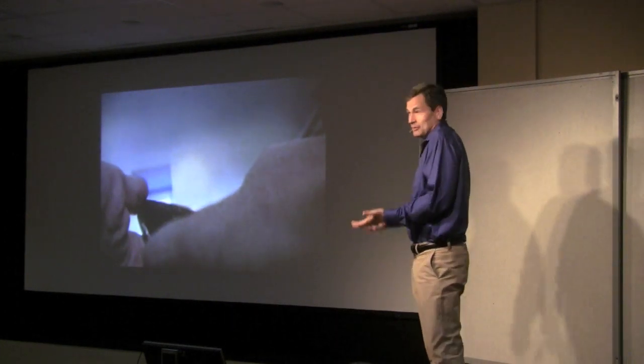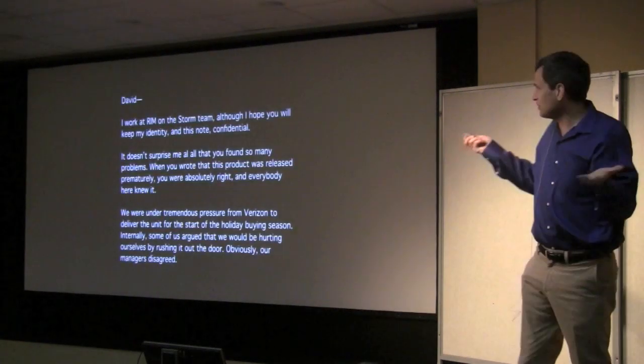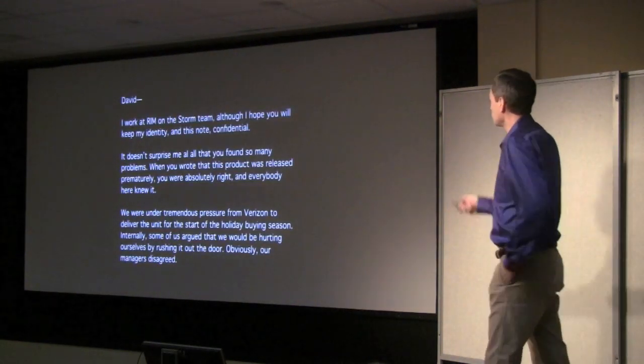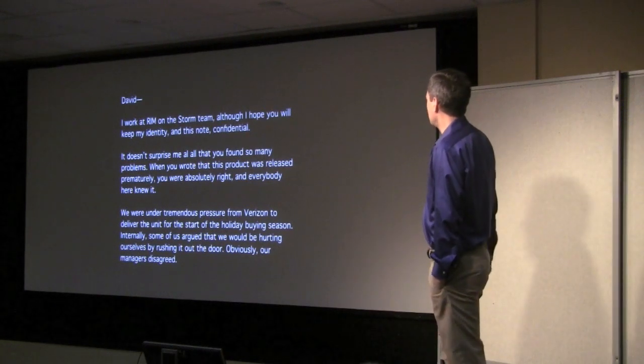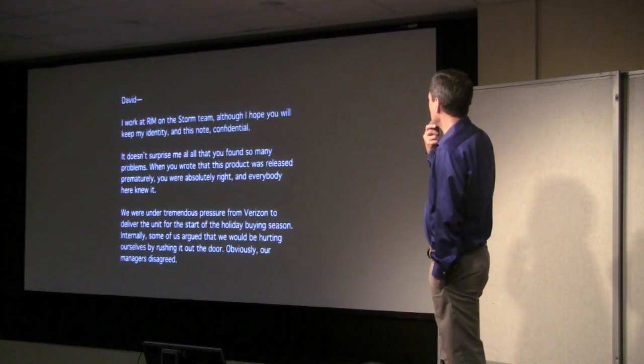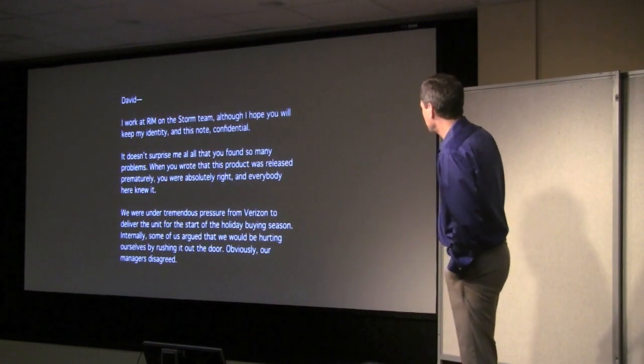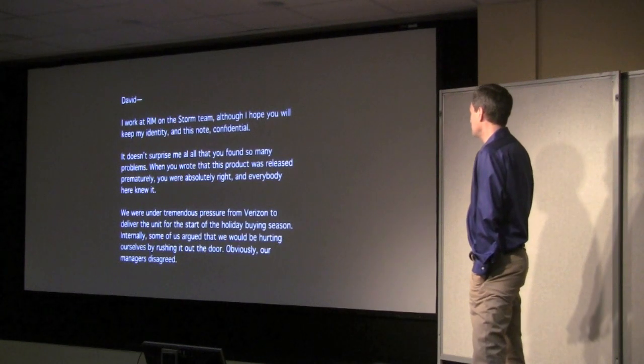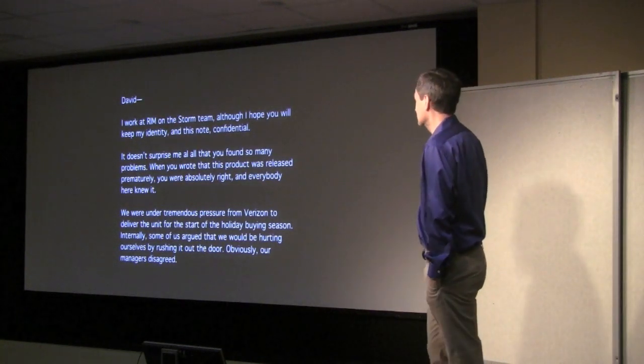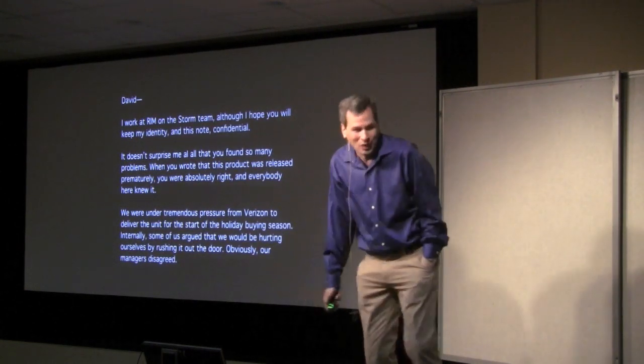So I published my review and it was scathing. And yet I got this email afterwards. David, I work at RIM on the storm team. Although I hope you'll keep me confidential. It doesn't surprise me. You found so many problems. When you wrote the product, it was released prematurely. You were absolutely right. And everyone here knew it. We were under tremendous pressure from Verizon to deliver the unit at the start of the holiday season. Internally, some of us argue that we'd be hurting ourselves by rushing it out the door. Obviously, our managers disagree. What the hell?